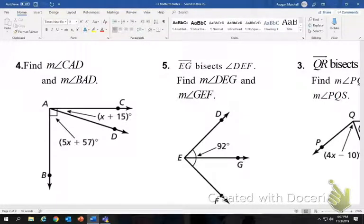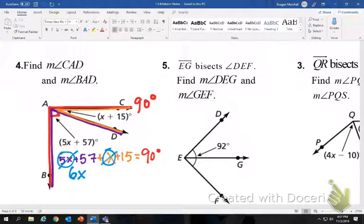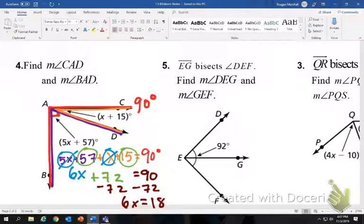Number 4 is very similar, except for it's not a straight angle. What you should notice in this is this box. It means the outer angle makes 90 degrees. So instead of them adding up and equaling 180, they add up and they equal 90. So we're going to take each of our angles, we'll start with BAD, which is 5X plus 57. We're going to add it to the other inner angle, DAC, which is X plus 15, and they will equal 90 degrees. So we're going to combine like terms, 5X and X make 6X, 57 and 15 make 72. Subtract that 72 on both sides, 6X equals 18, so X equals 3.